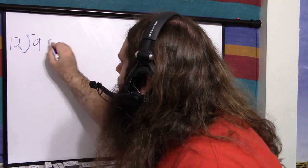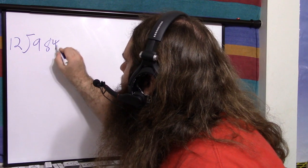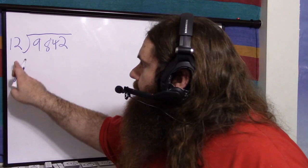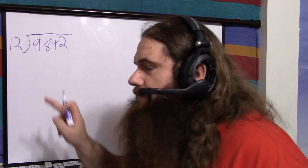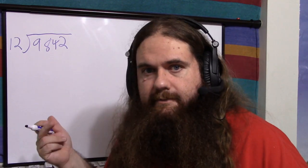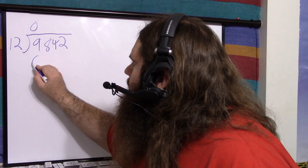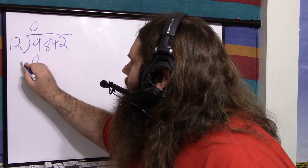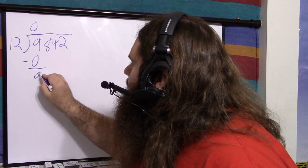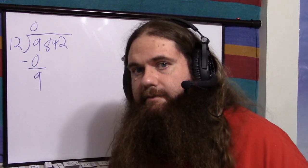12, do a little symbol, 9, 8, 4, 2. So we say: how many times does 12 go into 9? Zero. 0 times 12 is 0. So we subtract — we're left with 9. That's called the remainder.